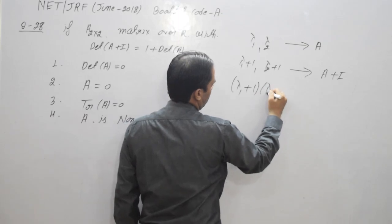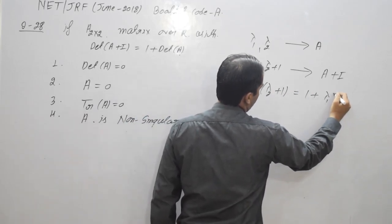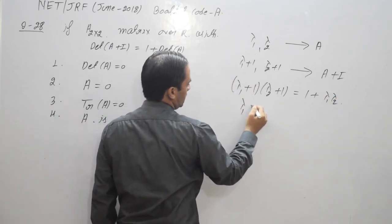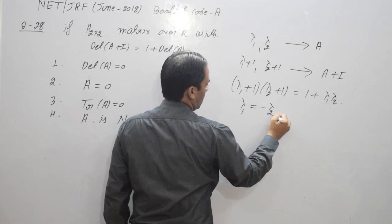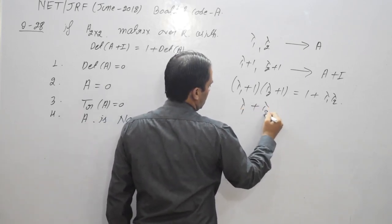So (λ1+1)(λ2+1) should be equal to 1 plus λ1 into λ2. By simplifying this equation, we get λ1 is equal to minus λ2 or λ1 plus λ2 should be 0.